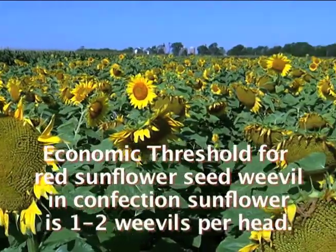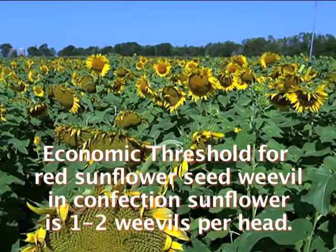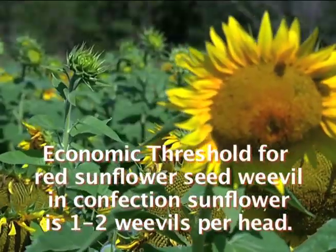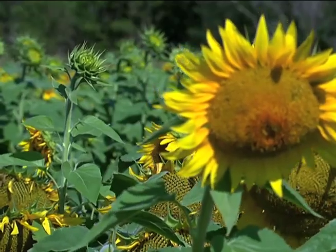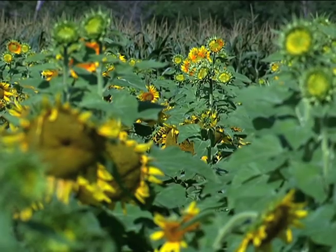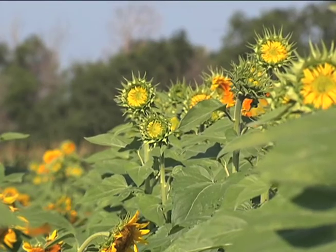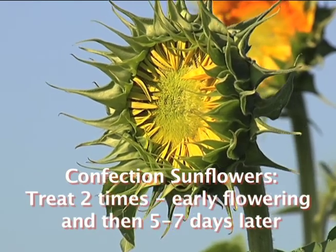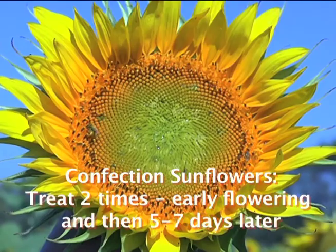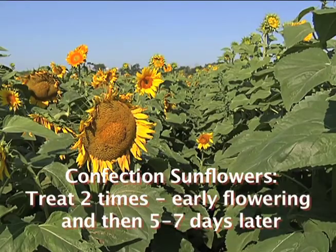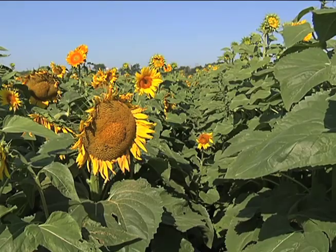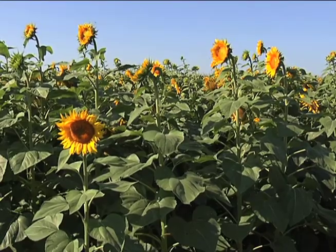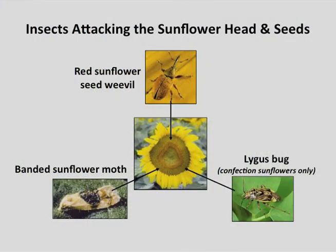For the confection or hulling sunflower market, the economic threshold is only one to two weevils per head. This is due to the confection sunflower industry standards for low damage of only 0.5 percent seed damage. We recommend sunflowers grown for these markets be treated a minimum of two times — once at the early flowering R5.1 and again five to seven days later. With this type of program you'll have a window of protection against several damaging seed insect pests, like the banded sunflower moth, lygus bug, in addition to the red sunflower seed weevil.